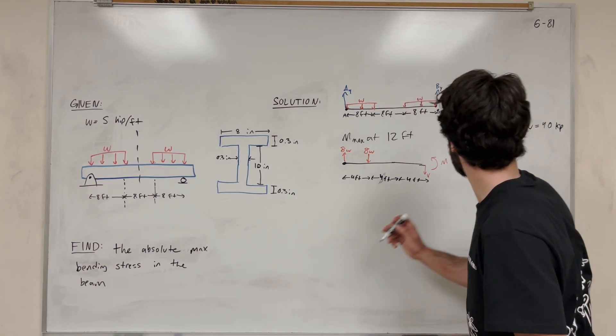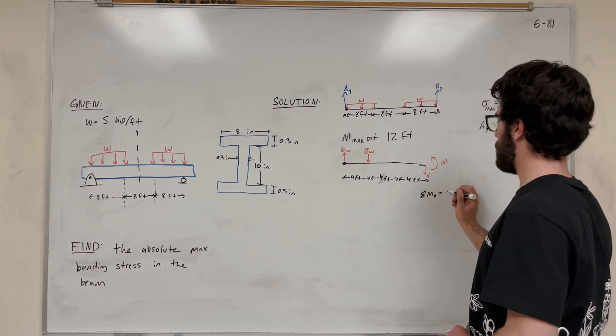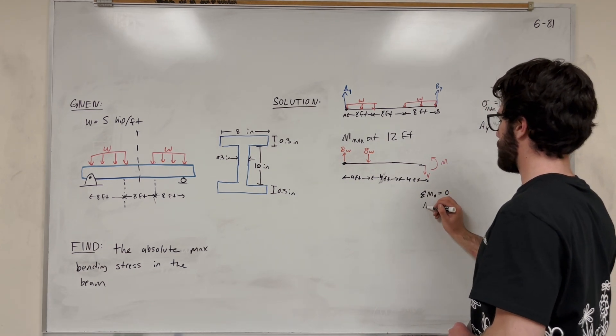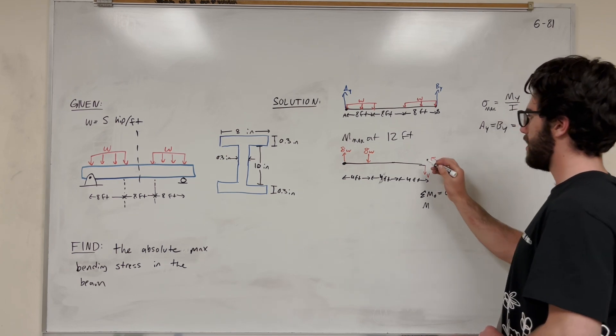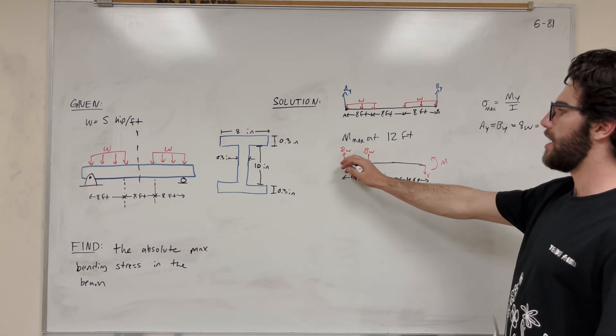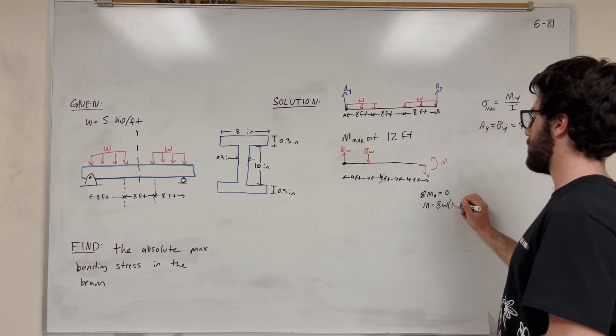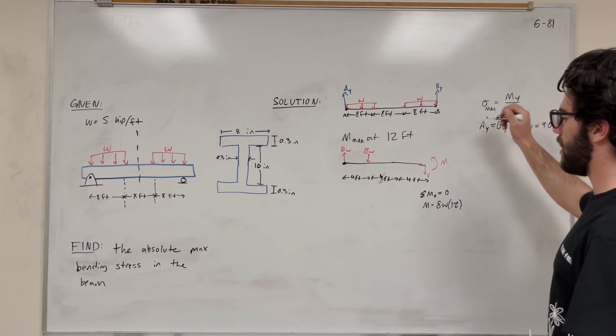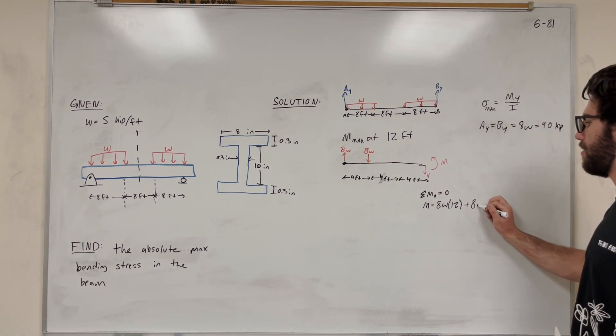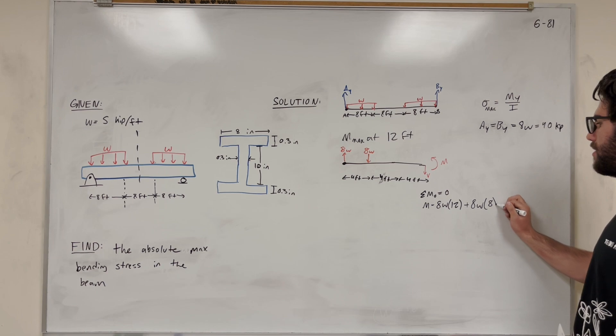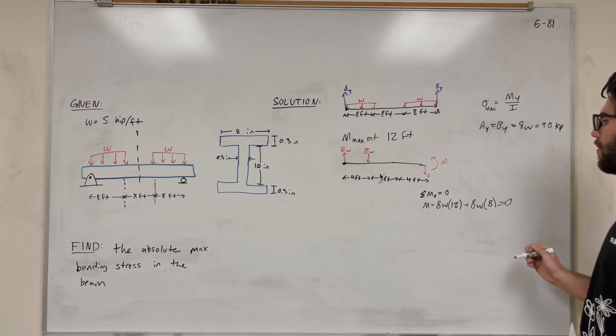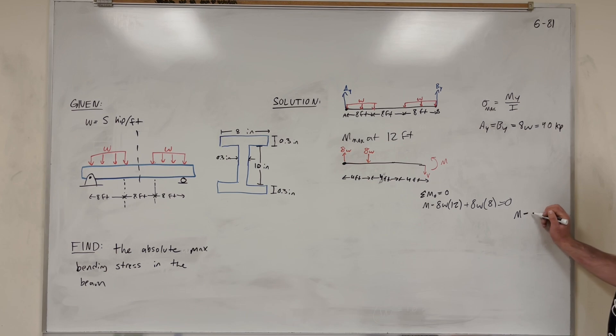So let's take sum of the moments. Set it equals 0. So we're going to get that this moment, right, is going counterclockwise. So we're going to add it. And we have this 8w at the end. And that's 12 feet away. And it's making us want to rotate clockwise. So we need to subtract the force of 8w times the distance of 12. And this 8w is making us want to rotate counterclockwise. So we're going to add it. Plus 8w, distance of 8. Right? 4 plus 4. That's equal to 0. So you solve this. And you get that moment. It's equal to 32w. And you can plug in 5. And you get that. It's equal to 160. And this is in kip feet.